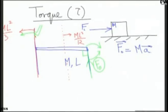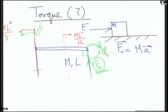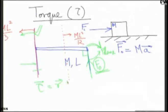This force will produce a rotational motion about this axis. Please understand: this force and this axis are not parallel. This force is in the plane of the rod and perpendicular to it. This force will produce a rotational effect about this axis. Torque is defined as R cross F, where R is the position vector from the axis.